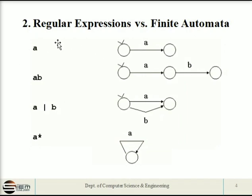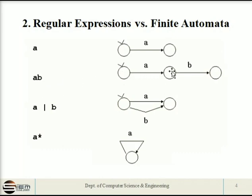Now looking at the difference between regular expressions and finite automata. If the regular expression is just 'A', there are two nodes: a starting node and a final node, with only A being processed. If it is AB (A dot B), first A is processed and then B is processed in series. If it is A or B, from the starting node either A or B is processed. And for A-star, A starts from a node and returns to the same node — a loop.